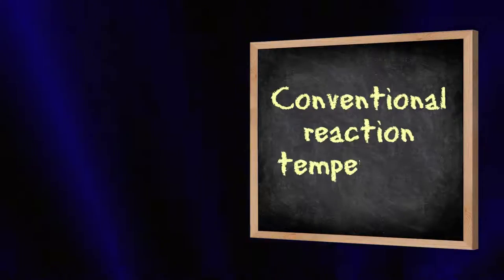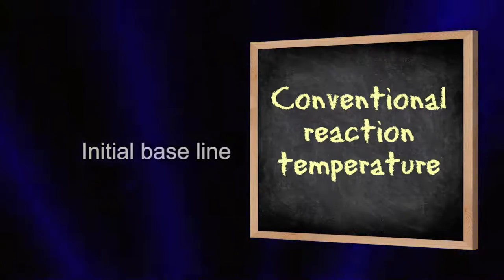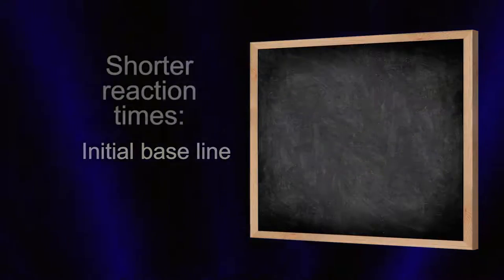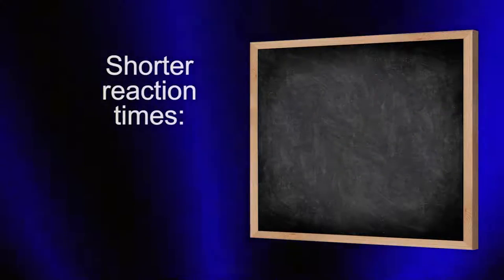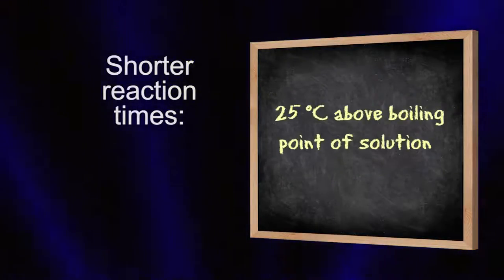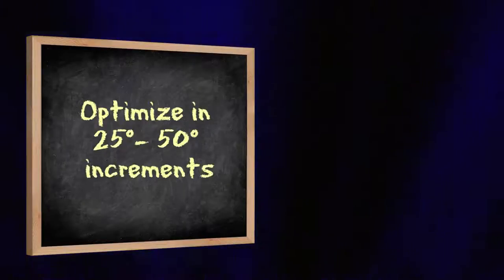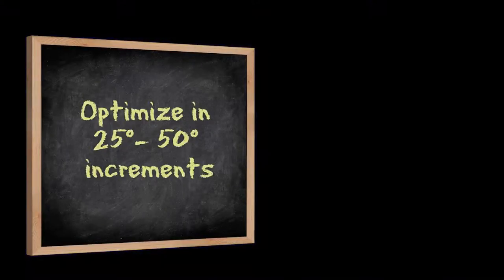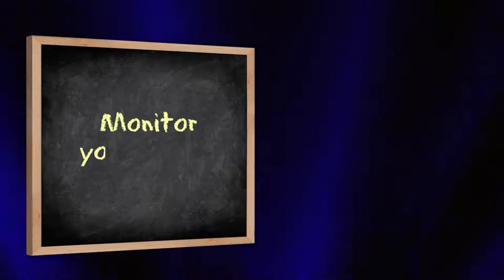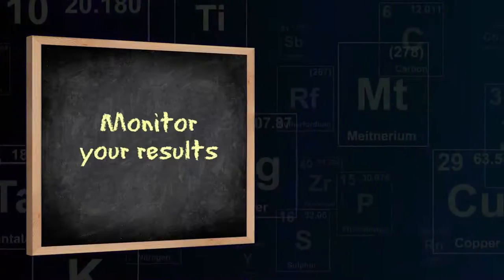When programming temperature in the microwave, a conservative chemist may start at the conventional reaction temperature or reflux to get an initial baseline. For shorter reaction times, a good starting point is 25 degrees C above the boiling point of the solution. Then, instead of optimizing the temperature in 5 degree increments, try using 25 to 50 degree jumps and monitor your results by TLC or some other analytical technique.